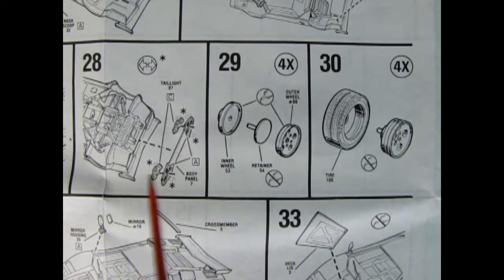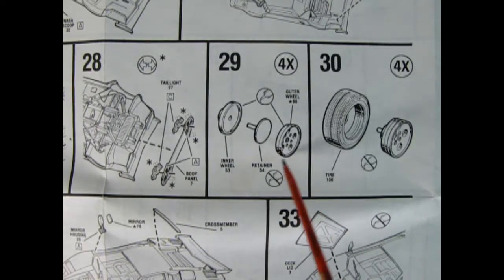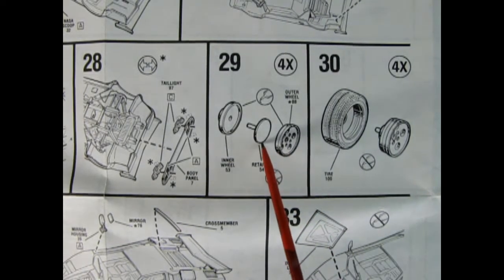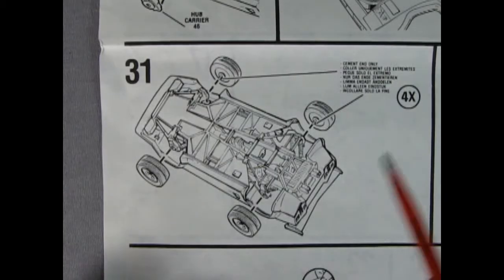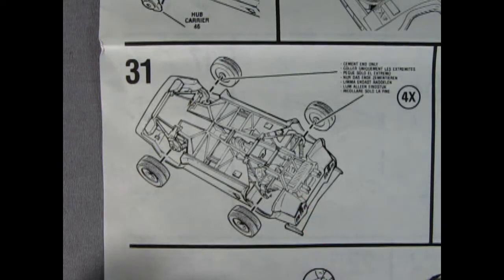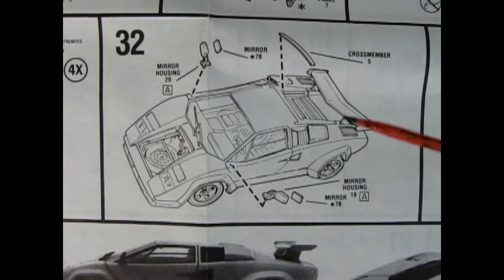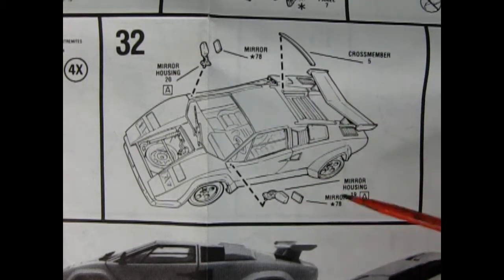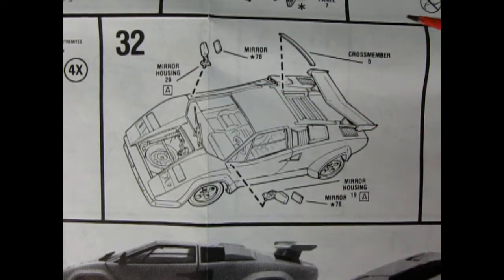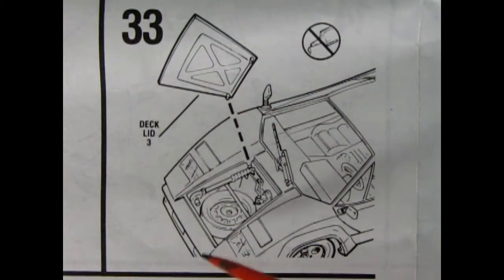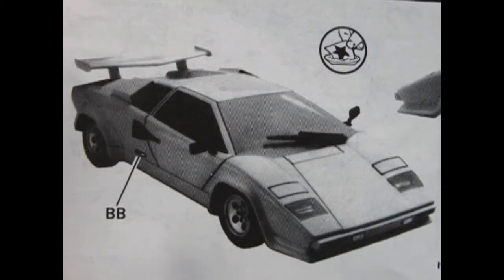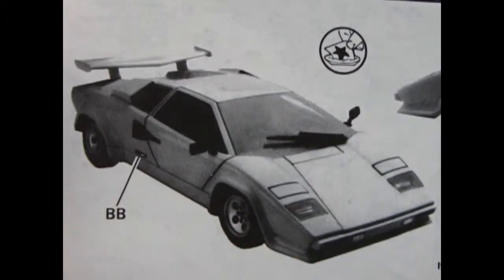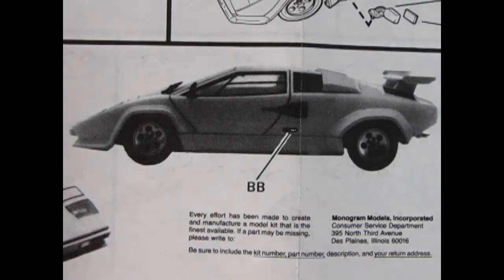In panel 28 we see this body panel being glued in place with our taillights that goes into the back. We've got our chrome outer wheel, the inner wheel, the wheel backing plate, and all that pushes into the tire. Panel 31 shows our wheels being glued in place, followed by panel 32 that shows the side mirrors and a cross member. Last but not least, we get to put in the deck lid. At the bottom of our instruction sheet we see the decal placement for the model kit.